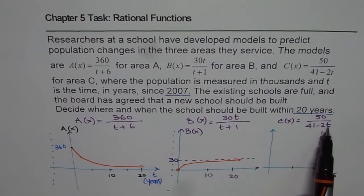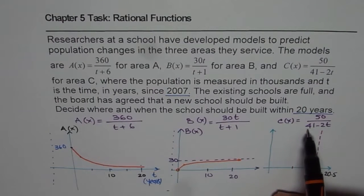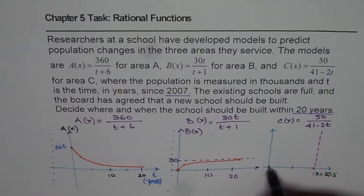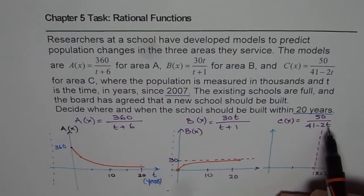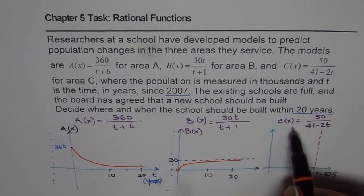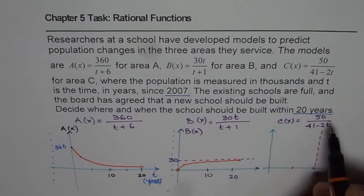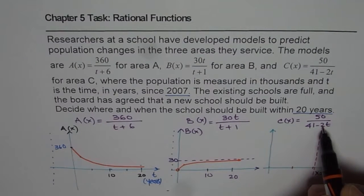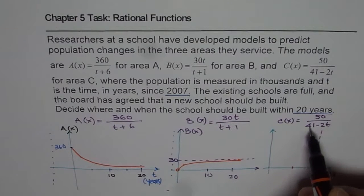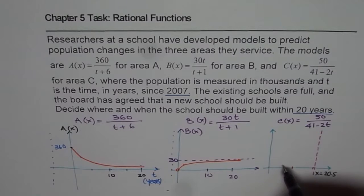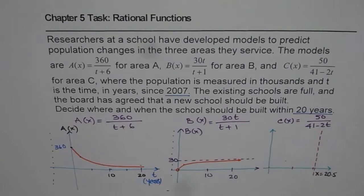If t is 0, then the value is 50 divided by 41, which is kind of a low value. As t increases, we find that the value of C(x) increases. If t is, let us say, 5, then in that case 5 times 2 is 10. 41 minus 10 will be around 31, and this will be kind of increasing. So what we notice here is that as t increases and it approaches 20, the graph goes very, very high.